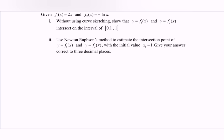Given we have the first function f₁(x) = 2x and the second function f₂(x) = -ln(x). Without using curve sketching, show that y = f₁(x) and y = f₂(x) intersect. This means the first function equals the second function because they have the same y.